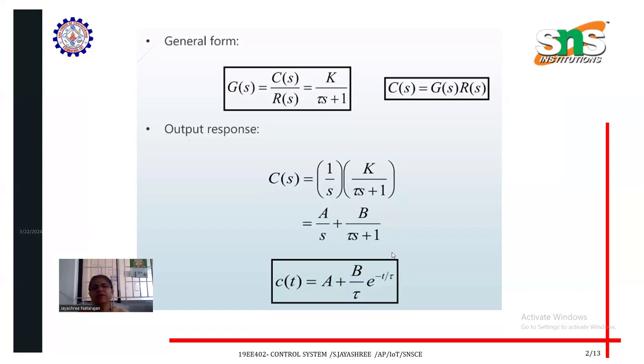This is the equation of first order system. If you plot this, we'll be getting a graph like this. Because it is exponentially increasing. Take this as y-axis, this as x-axis. The response started increasing exponentially after a particular time it comes to steady state.